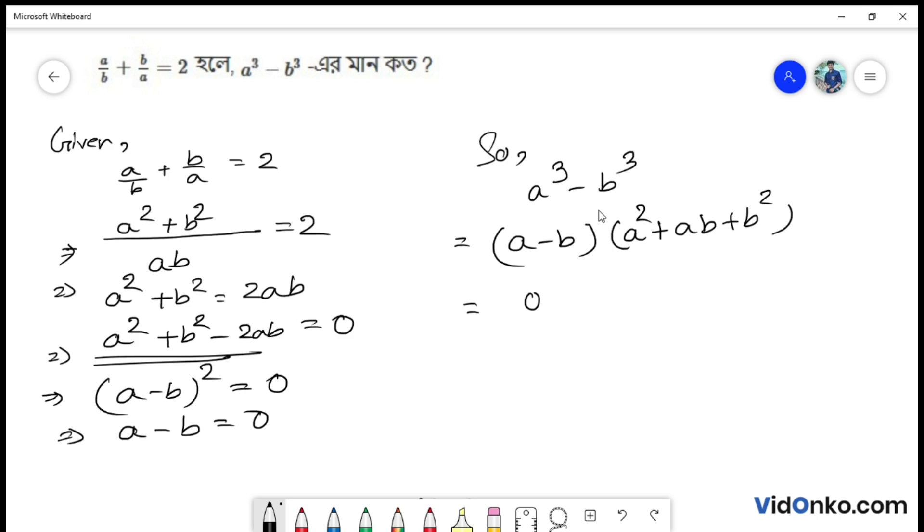Here a minus b value we found is 0. So 0 into a² plus ab plus b². We know 0 into anything equals 0. So a³ minus b³ equals 0.